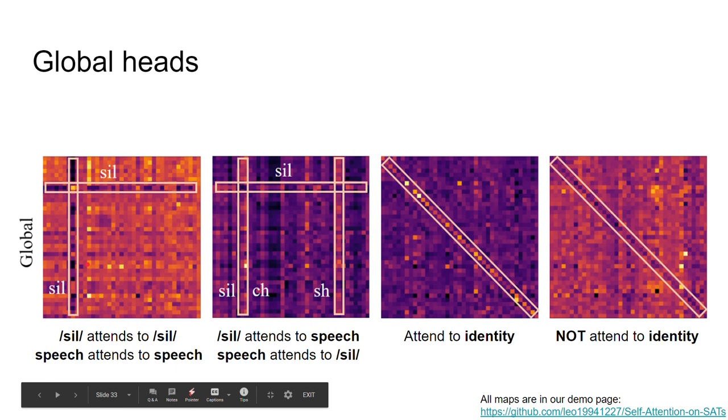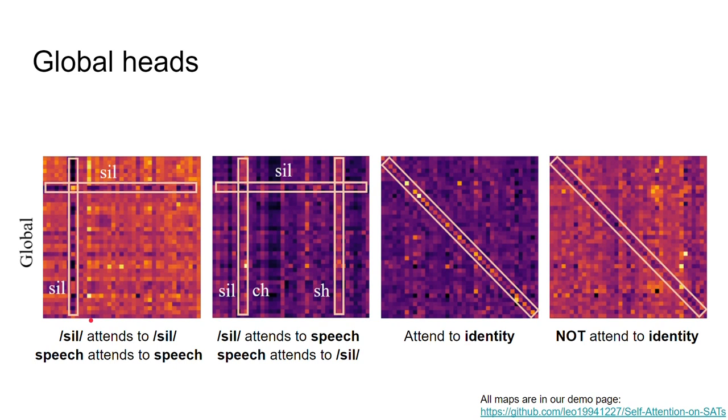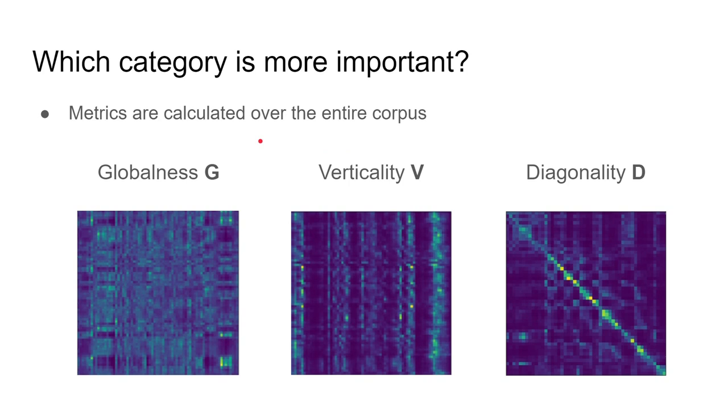As for global attentions, the first head represents that silence attends to silence and ignores the others, and the speech part ignores silence and attends to speech. The second head represents the opposite, that silence ignores silence and attends to speech, while speech attends to silence. The third head represents attending to identity, which are frames belonging to the same phoneme as the query. The last head represents the opposite, not attending to identity as the negation. All phoneme relation maps are visualized in our demo page.